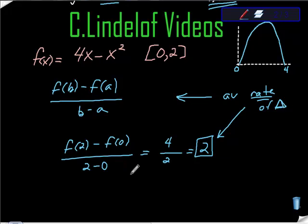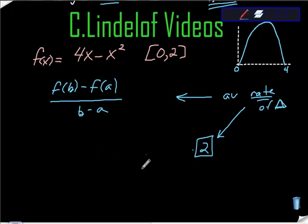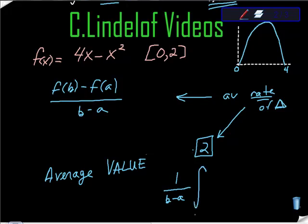The second question is a more difficult question, I think. Well, a more interesting question to me. So it asks the question, for average value, we do something different. And what we do in that case is we take 1 over b minus a times the definite integral a to b of f of x dx.